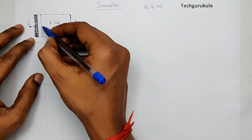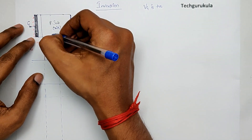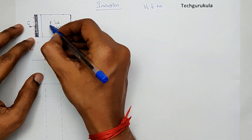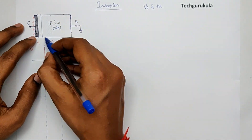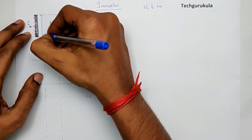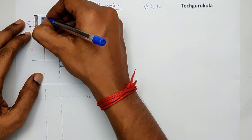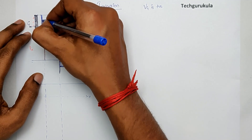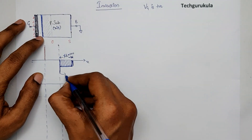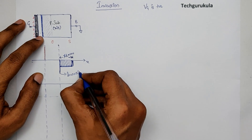To pictorially represent this: there will be a depletion region extending into the semiconductor, but near the surface there will be a region populated with electrons. This charge is called the inversion charge.